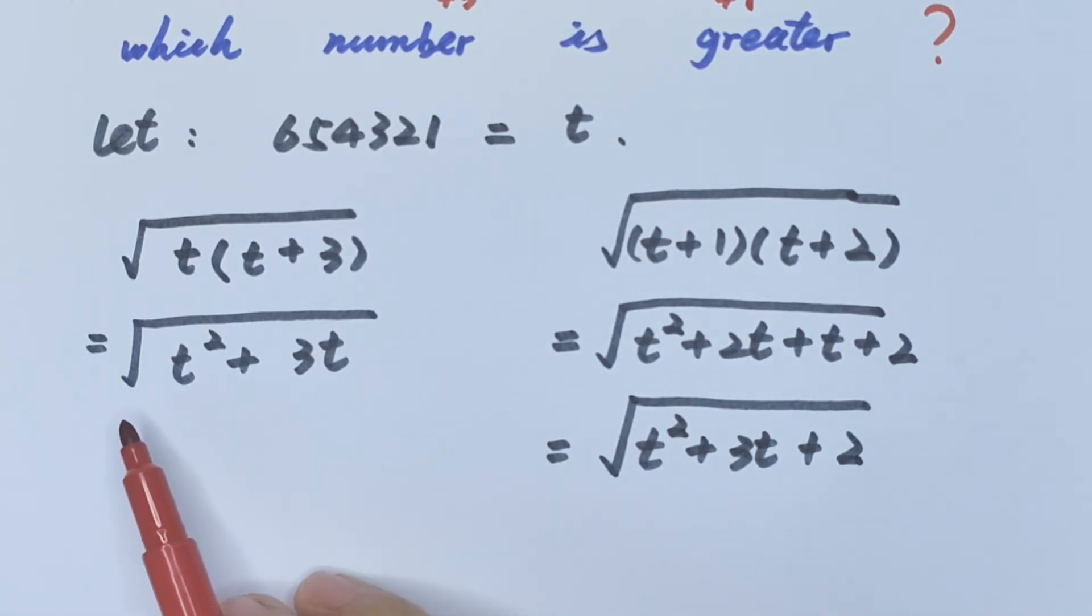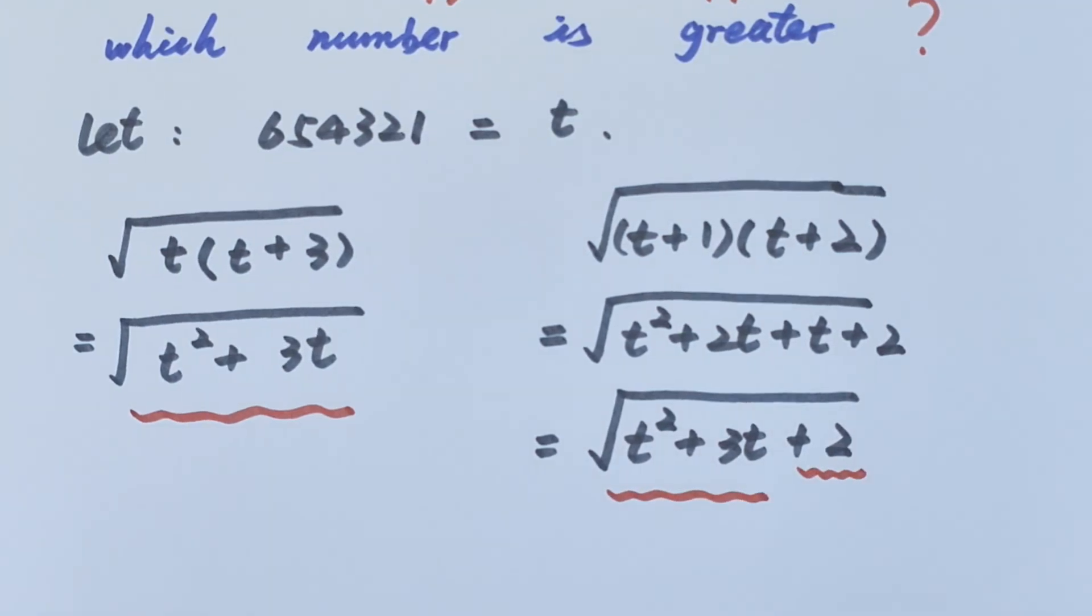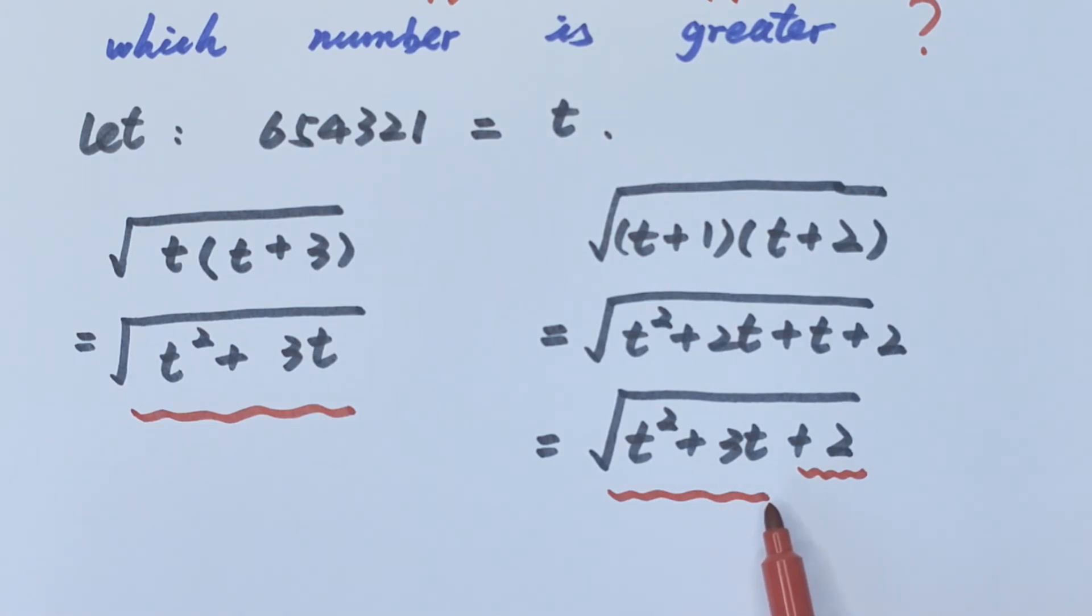The left side is square root of t squared plus 3t, and the right side is square root of t squared plus 3t, then plus 2. So the final answer is the right side is more than the left side.